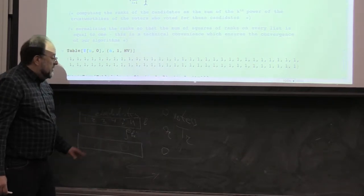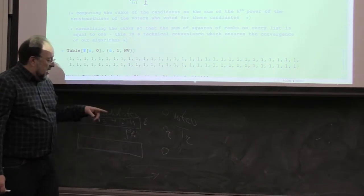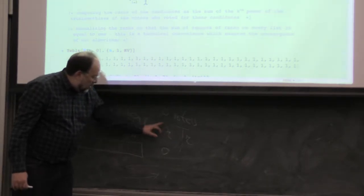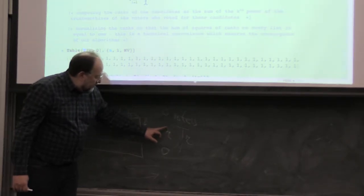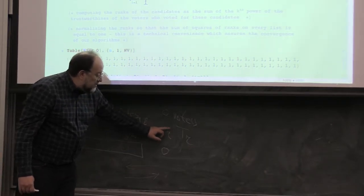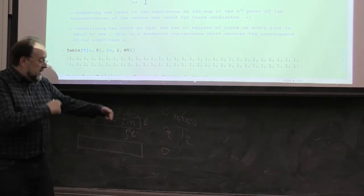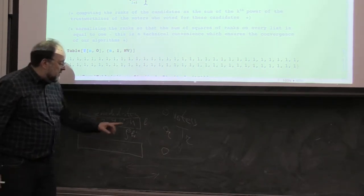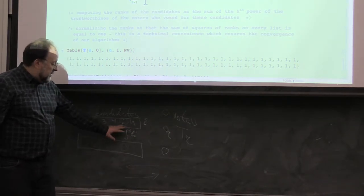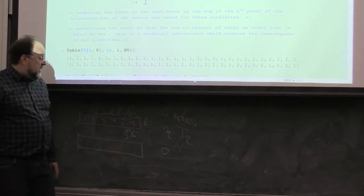he will get trustworthiness of rho of L, I, plus rho of L prime J. On the other hand, so this is in this direction, but then in forward direction, each vote of a voter is counted not one,